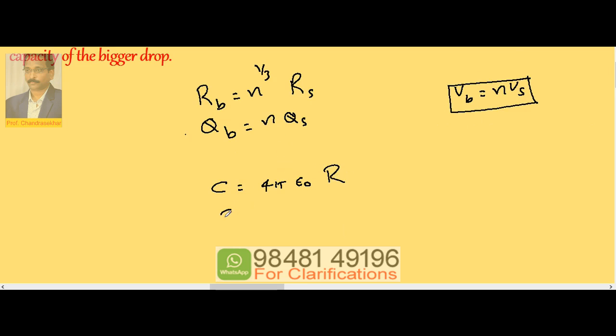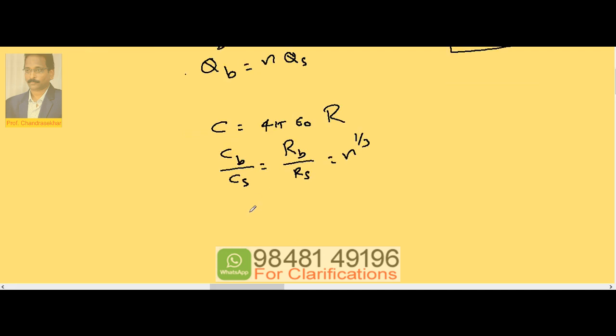So capacity of the big drop by capacity of the small drop is radius of the big drop by radius of the small drop, which is nothing but n to the power of 1/3. So capacity of the big drop is always n to the power of 1/3 into capacity of the small drop.